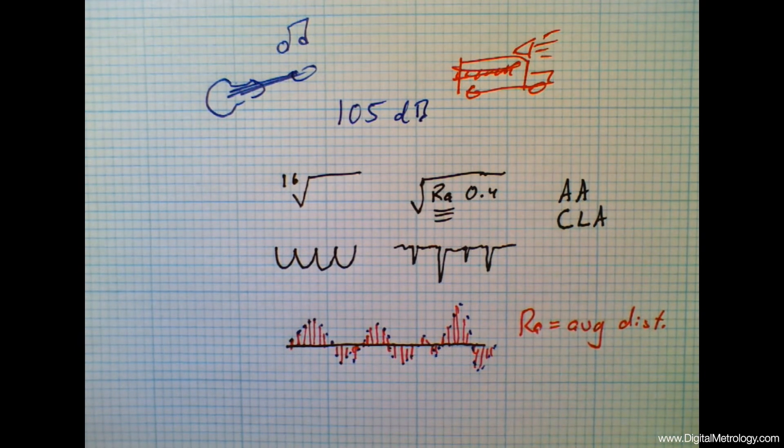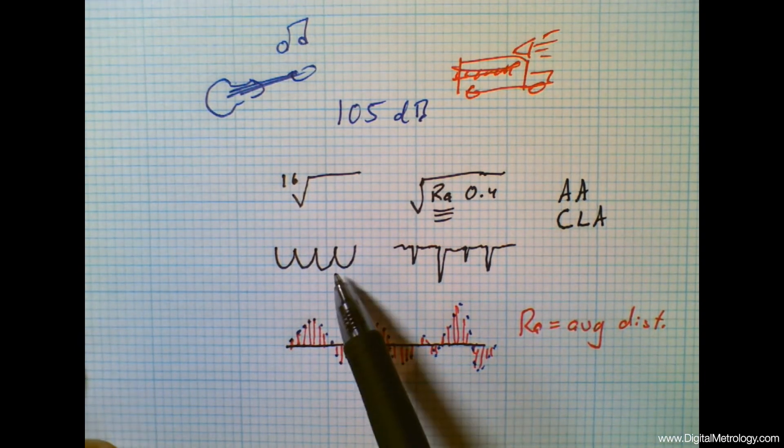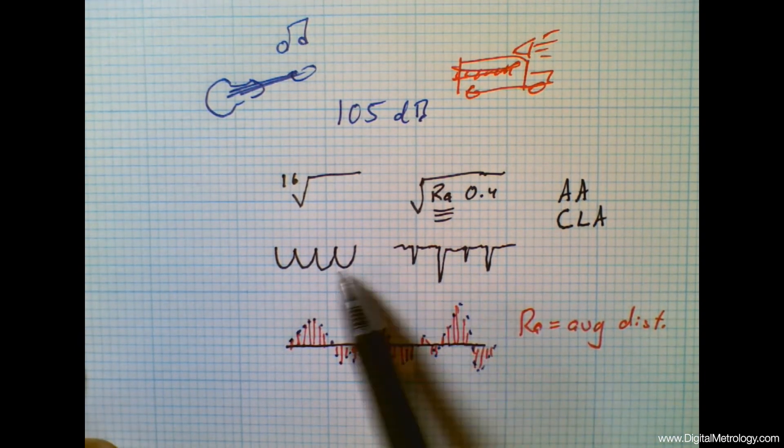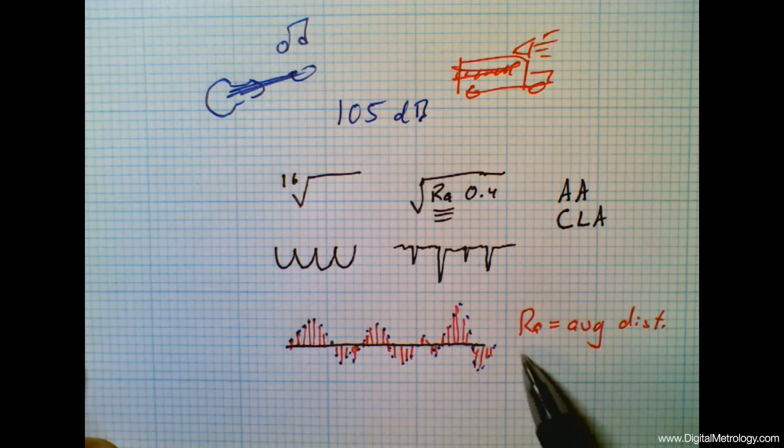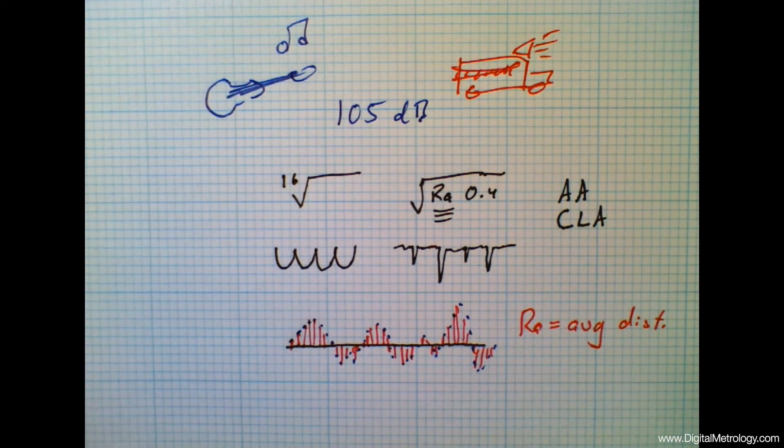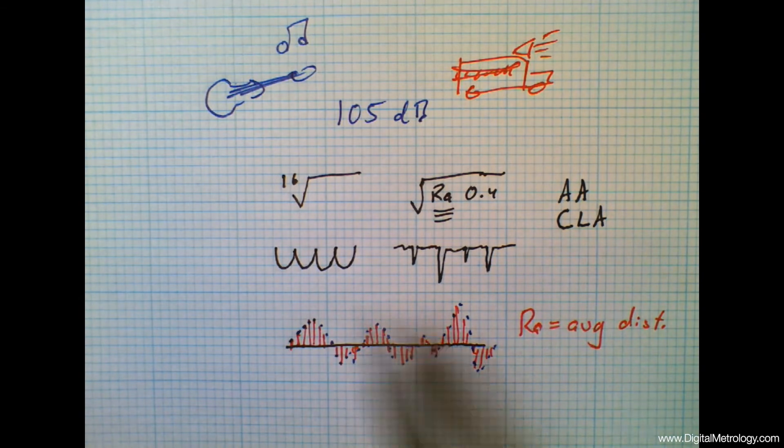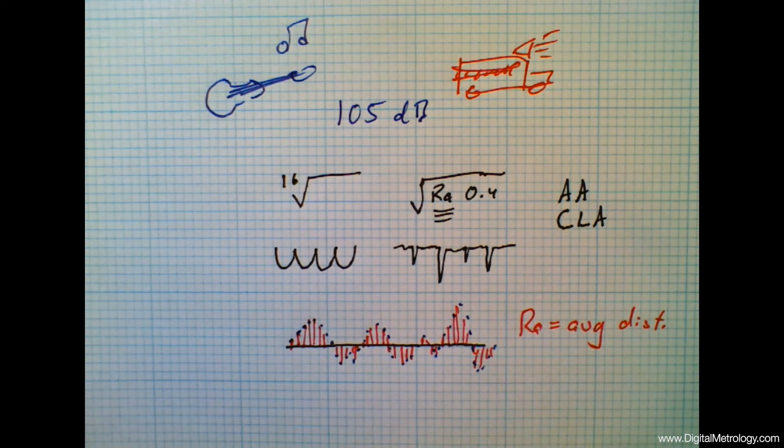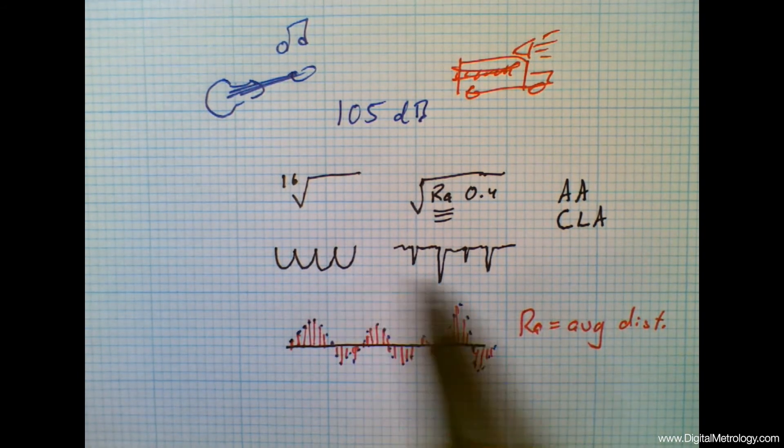So since we're just averaging those distances, these two surfaces could average out to have the same RA value and yet act very differently. Can you imagine sitting on each one and sliding around? So RA gets a bad rap for being not so descriptive. It can't describe these two surfaces.